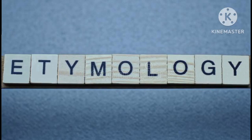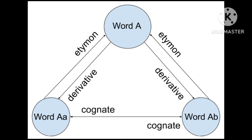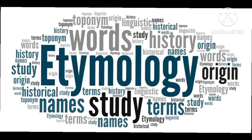What does Etymology mean? Etymology is the study of the history of the form of words, and by extension the origin and evolution of their semantic meaning across time. It is a subfield of historical linguistics and draws upon comparative semantics, morphology, semiotics and phonetics.